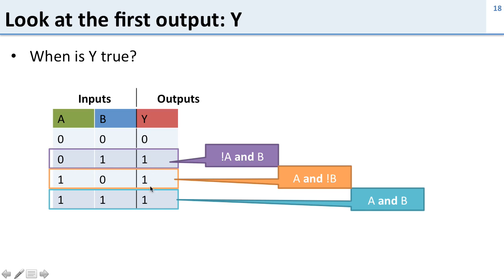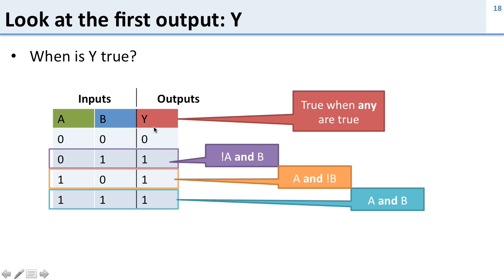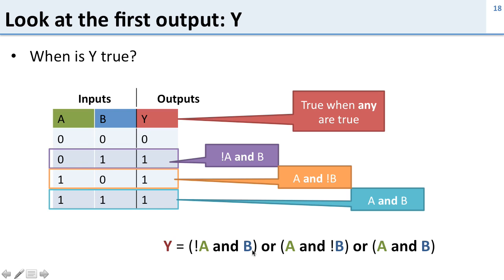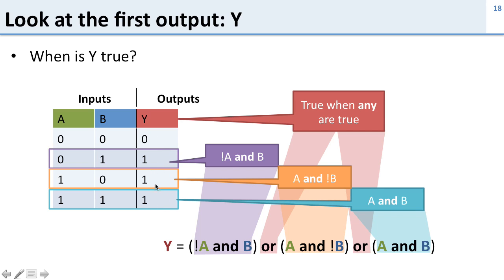Now we know when each of these individual terms is true, but how about y as a whole? Well, y is true when any of these are true. So we have one logic term for each of these outputs and we know how to combine them. We can write out our equation: NOT a AND b, OR a AND NOT b, OR a AND b. It's OR between these because y is true when any of these cases holds.